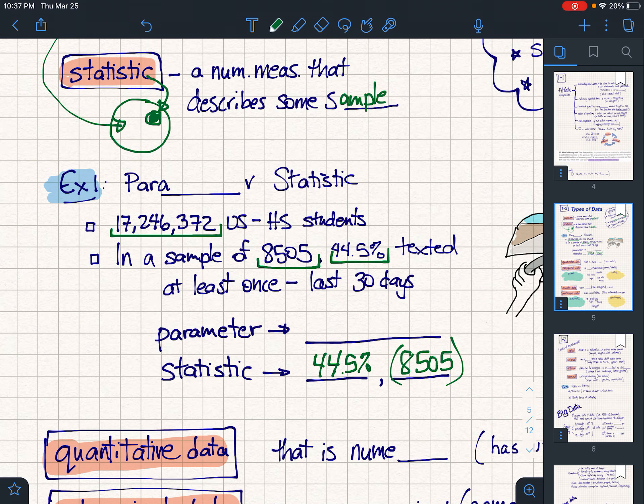Now, we could grab our calculators. If we trusted this number 44.5% and multiplied it by 17.2 million, I get roughly 7.6 million. So as a parameter, if I applied this on the whole population—and again you'd have to be confident that you're accurate—and by the way 8,500 is a substantial number of kids, we would have 7.6 million students who have been texting at least once during the last 30 days while they drive.